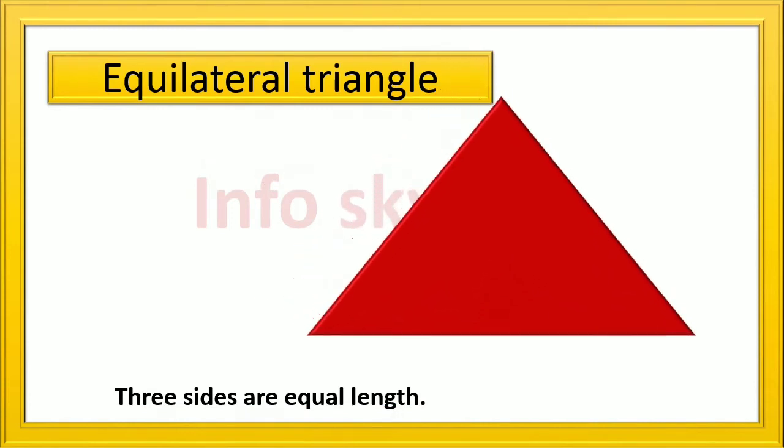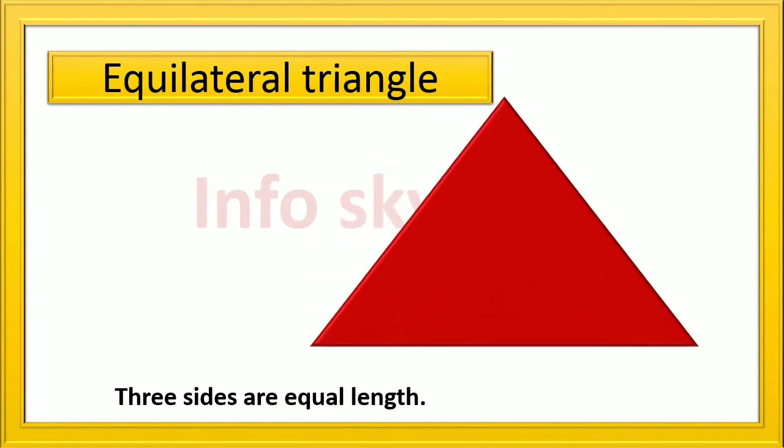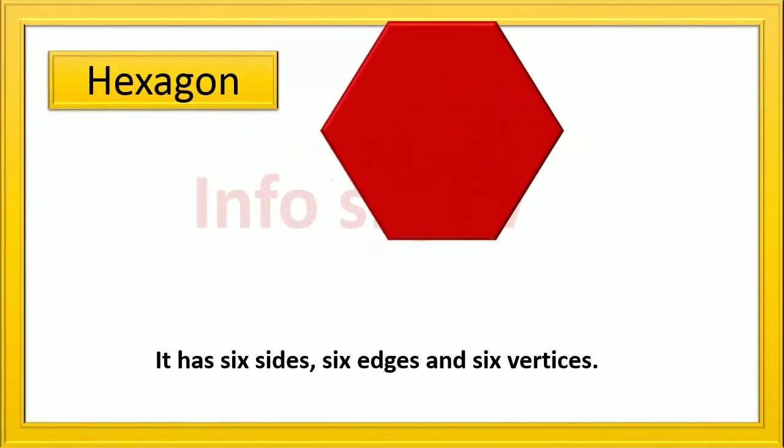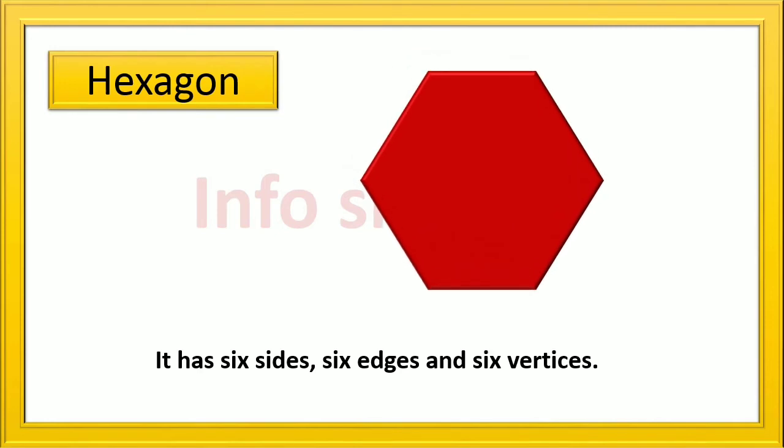Equilateral Triangle: three sides are equal length. Hexagon: it has six sides, six edges and six vertices.